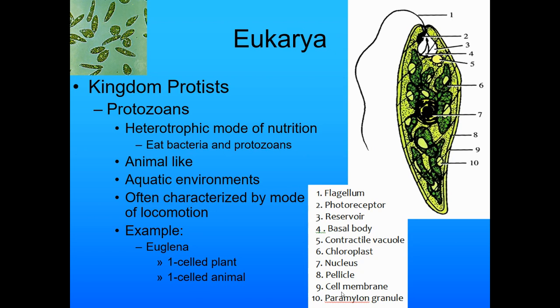Now we get to the eukarya — the ones that have the nucleus. The word 'eukarya' actually means 'the one with a good nut,' whereas prokaryote means 'the one before the nut.' The first kingdom we're going to look at is the protists. They contain protozoans. Protozoans have a heterotrophic mode of nutrition, meaning they eat bacteria and other protozoans.